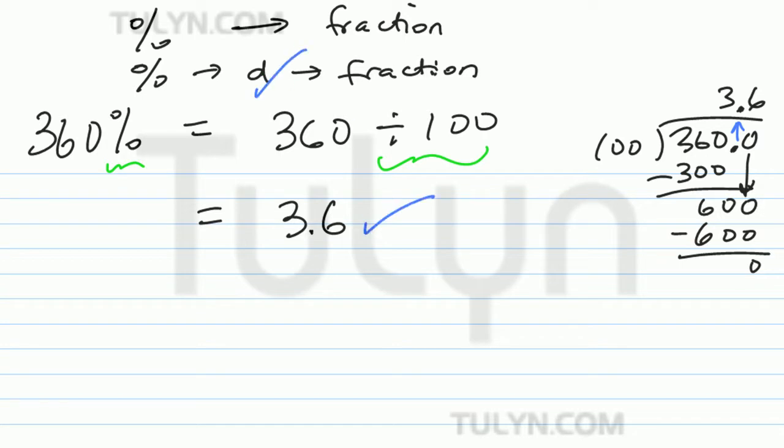So now that we got it as a decimal, we're going to go ahead and convert it into a fraction. So converting it into a fraction, just go ahead and pronounce this. How do we pronounce 3.6 in mathematical terms? It'll be 3 and 6 tenths.